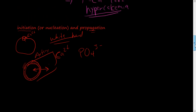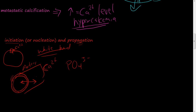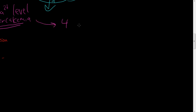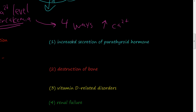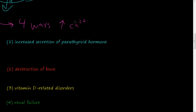The next one is metastatic calcification. Remember that metastatic calcification is due to high calcium levels or hypercalcemia. There are four main ways by which people will have increased calcium levels: increased secretion of parathyroid hormone, destruction of bone, vitamin D-related disorders, and renal failure. These are the four main ways by which a person will end up having increased calcium levels, which will then lead to metastatic calcification.